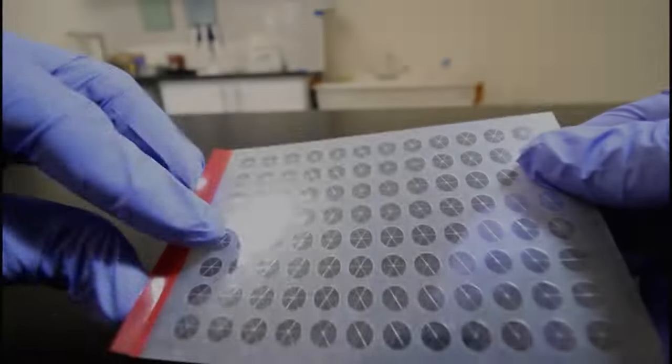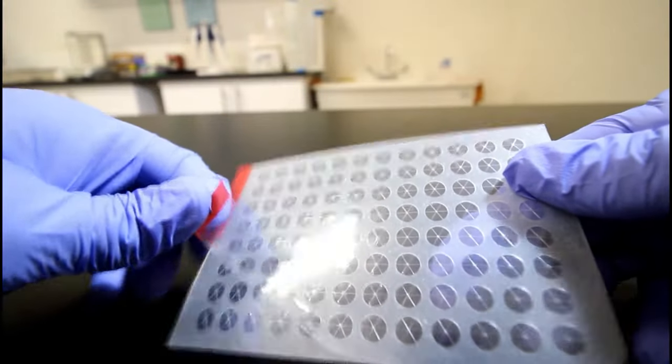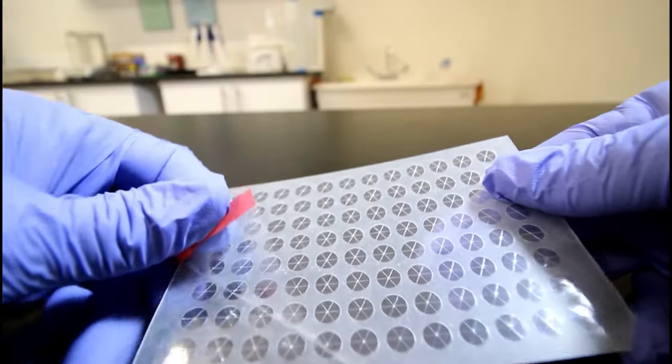Slit seals are easily placed on 96 well plates with an adhesive back, but there's no adhesive directly over the well spot.